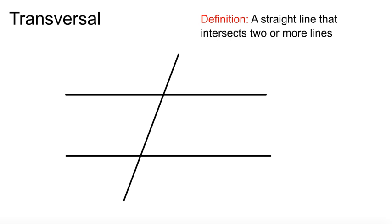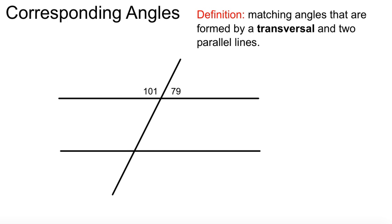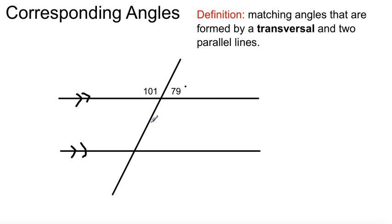To continue with this, here's our last example: corresponding angles. There's a transversal, and the definition is matching angles that are formed by a transversal and two parallel lines. These lines have to be parallel for this to work. These angles follow an F pattern — this angle here, 79 degrees, will be the exact same as this one. So same angle: there's your angle and there's your angle. And remember, what is a straight angle? It's 180. So 79 plus 101.